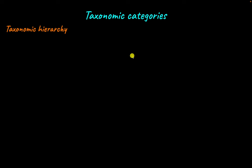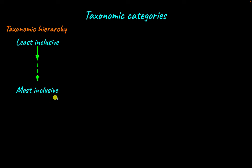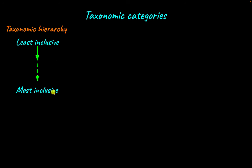Organisms are classified into a least inclusive category, which includes organisms that share the most number of common characters. And then there comes a most inclusive category, where organisms share the least number of common characters. There are many ranks in between, so let's take a look at those individual ranks or taxa.